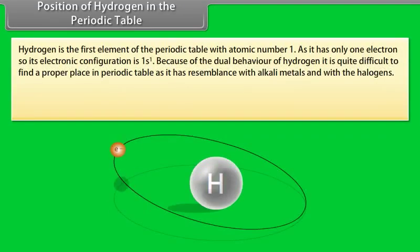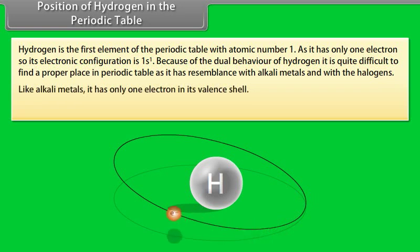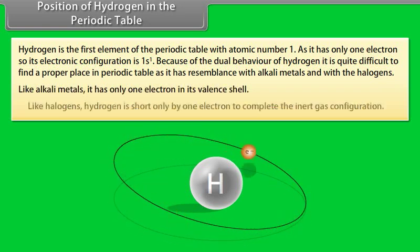Position of hydrogen in the periodic table. Hydrogen is the first element of the periodic table with atomic number 1. As it has only one electron, so its electronic configuration is 1s1. Because of the dual behavior of hydrogen, it is quite difficult to find a proper place in periodic table, as it has resemblance with alkali metals and with the halogens. Like alkali metals, it has only one electron in its valence shell. Like halogens, hydrogen is short only by one electron to complete the inert gas configuration.